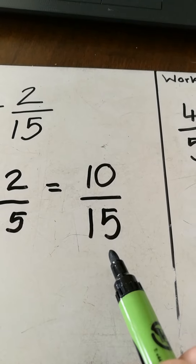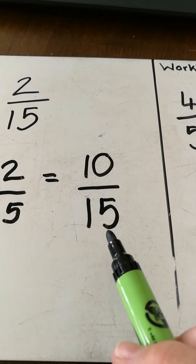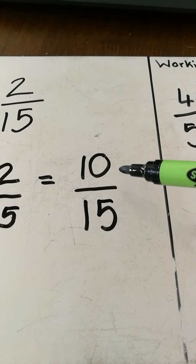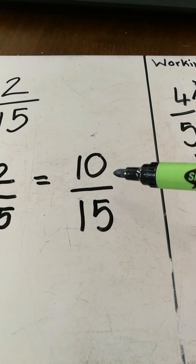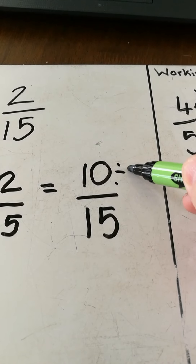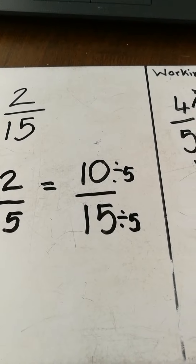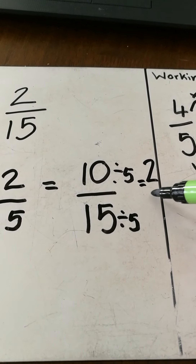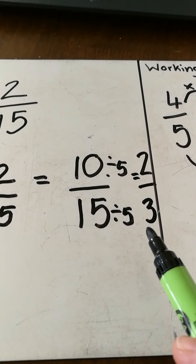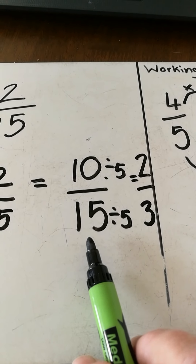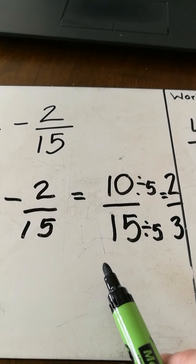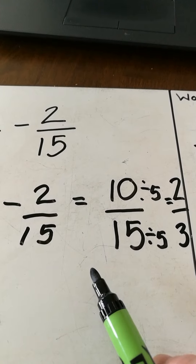You can either leave that as your answer or you can simplify it. To simplify, ask what times table are ten and fifteen in — they are both in the five times table, and we want the highest. So divide the top and bottom by five. Ten divided by five is two, and fifteen divided by five is three, so I'm simplifying ten-fifteenths to two-thirds. However, if you find that too much of a step, you can leave it as that answer, or leave it as an improper fraction. That should help you with Task A — pause the video and answer Task A.